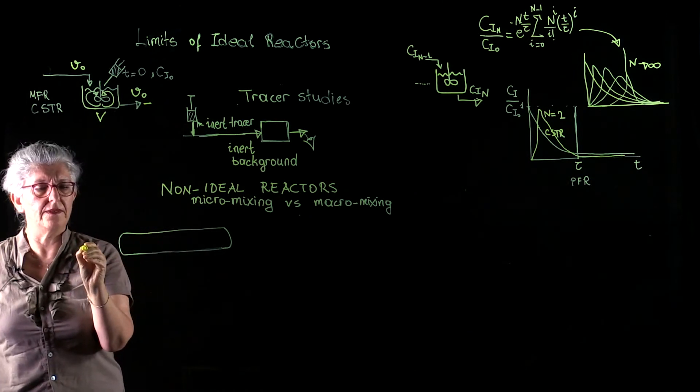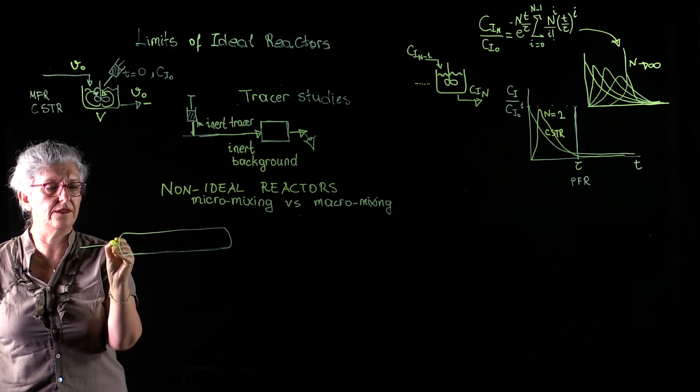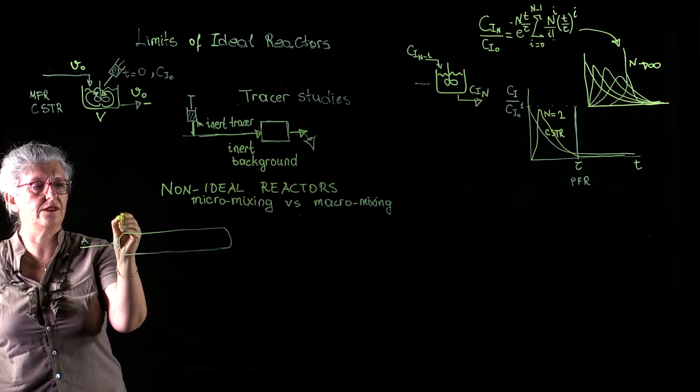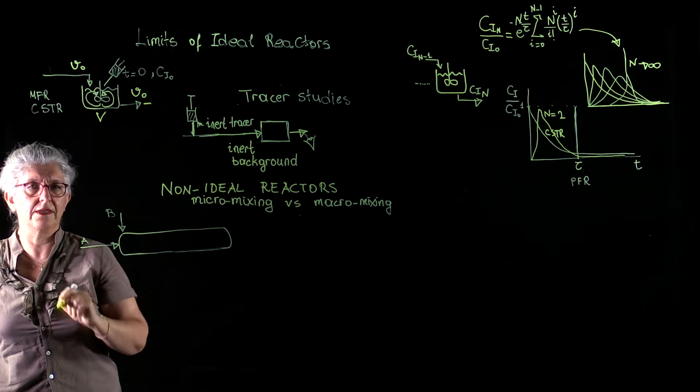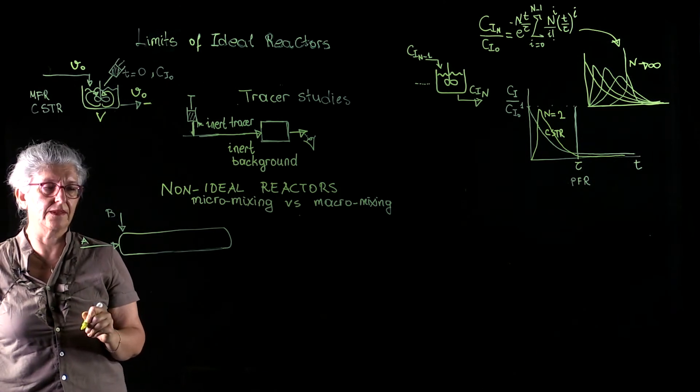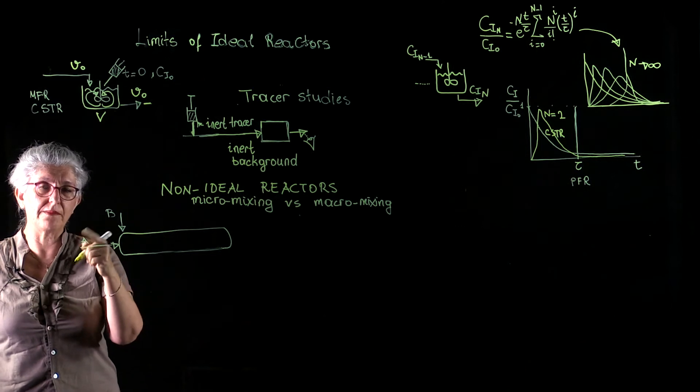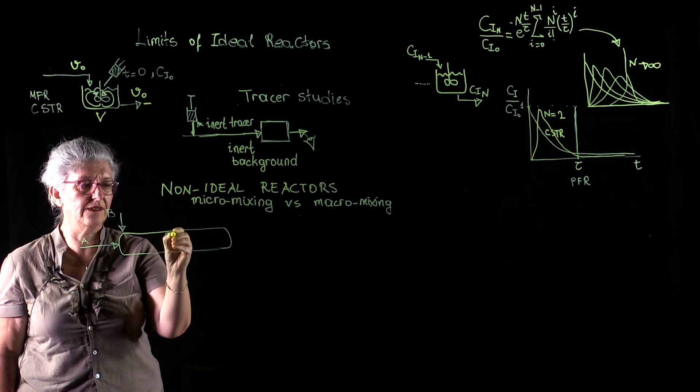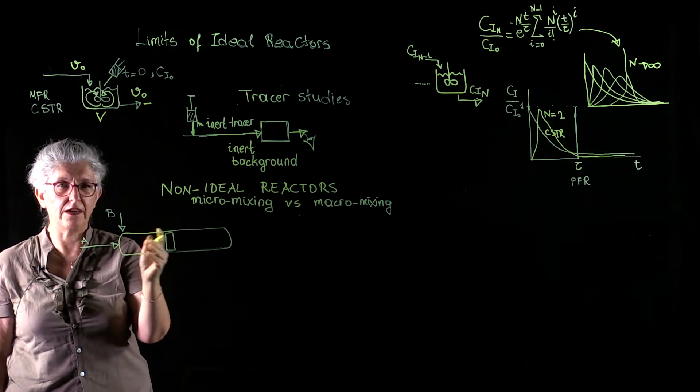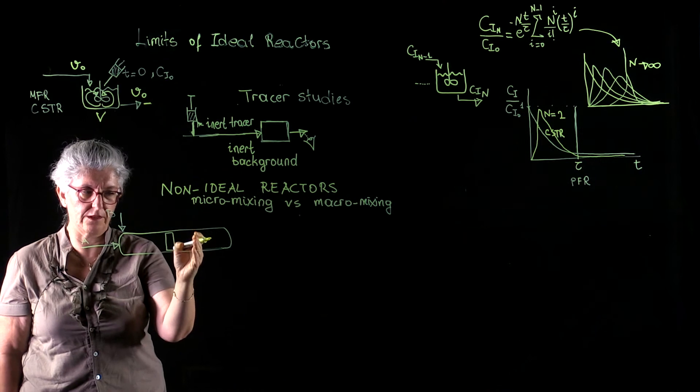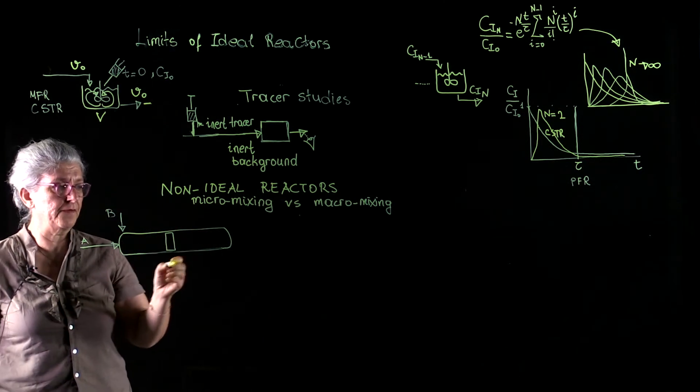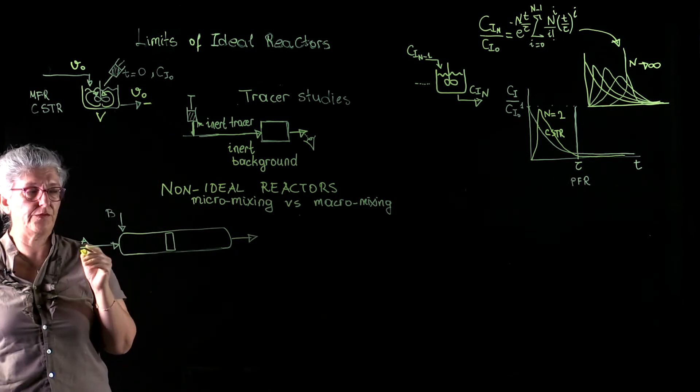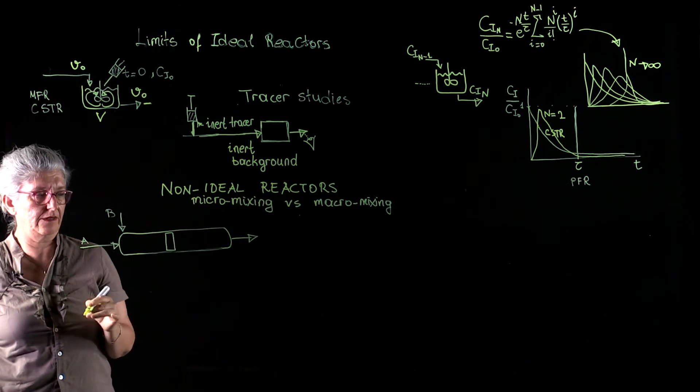Now let us consider a plug flow reactor this time. If we mix our reactants early in the reactor, this is stream A. Let us inject stream B at the inlet. This will be an early mixed fluid package which is going to traverse through the reactor without being mixed with the fluid element neither before nor after it. And I will leave the reactor as a perfect plug flow reactor configuration.